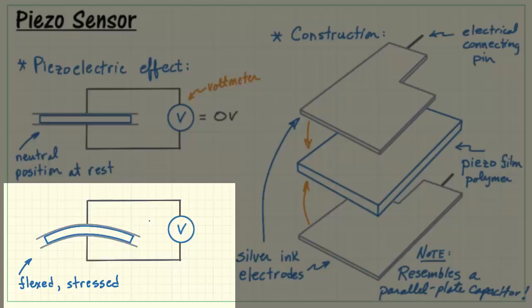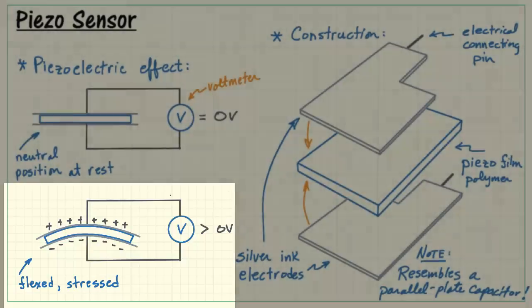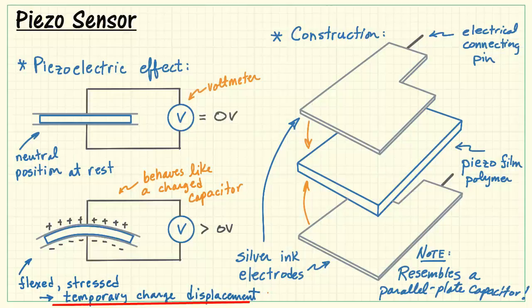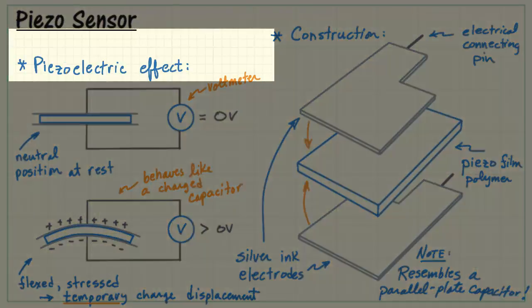Now, when you flex the sensor, that mechanical work translates into a charge displacement. We see plus charge accumulates on one side, negative charge accumulates on the other, and we then can see a non-zero voltage. The structure behaves like a charged capacitor, however, like any charged capacitor, eventually the charge will recombine, and so we find that the displacement is only temporary.